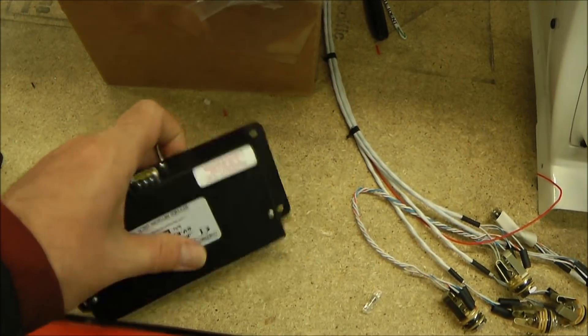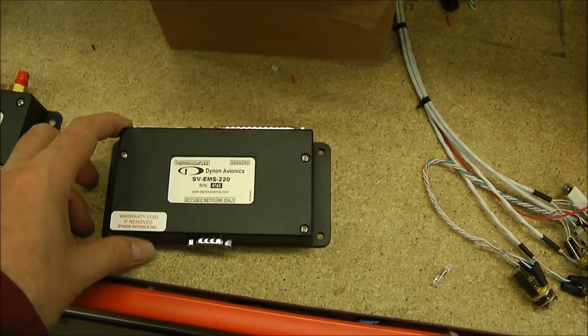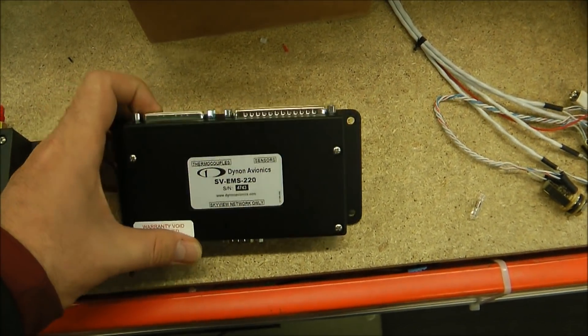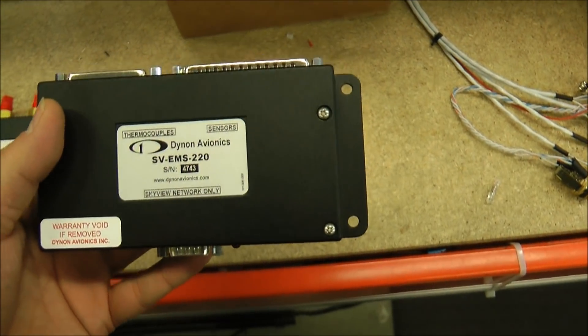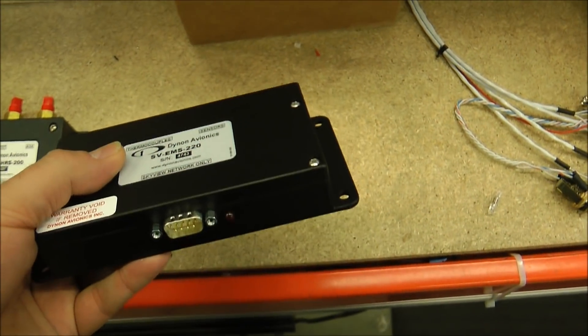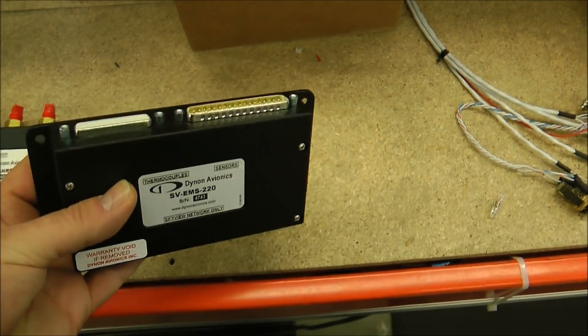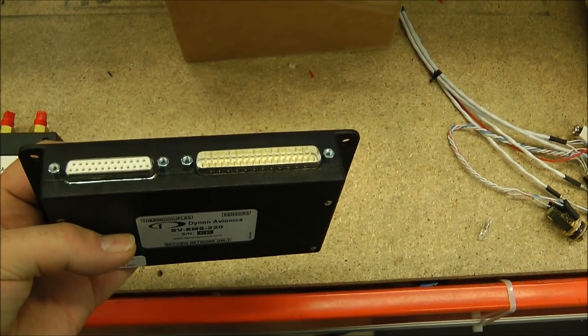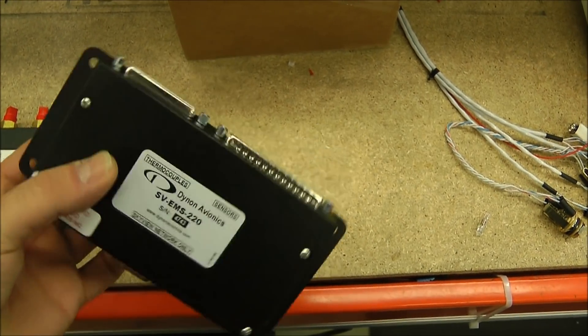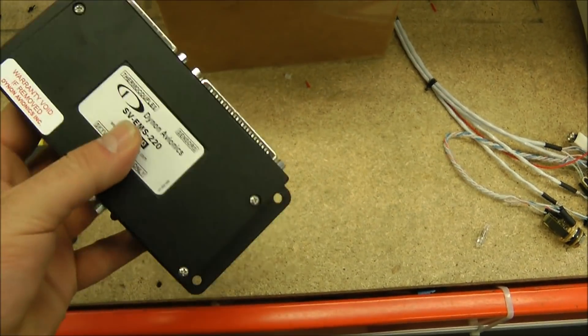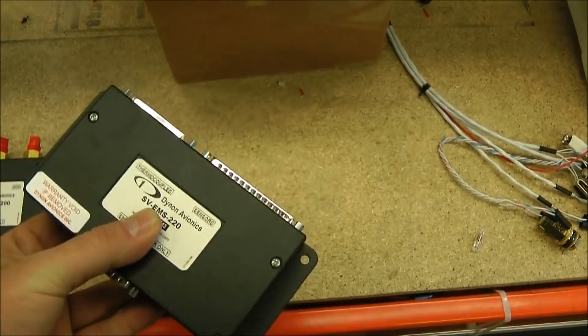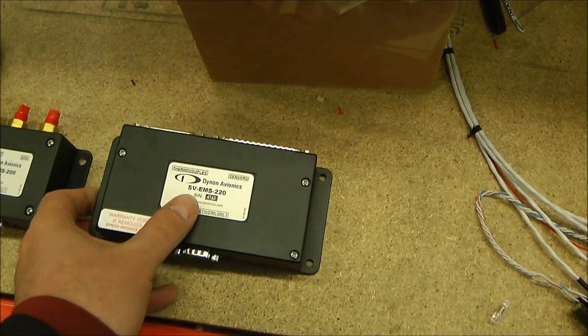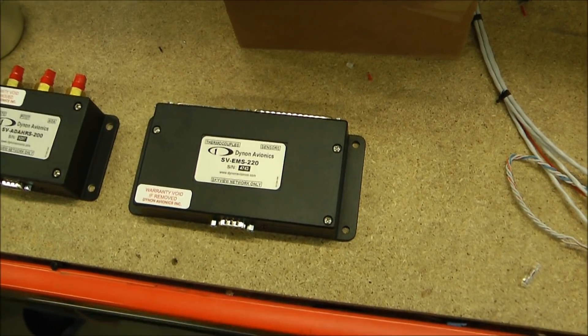There's really not a lot of options on this box for mounting. This one's what's called the EMS module. All the manufacturers now pretty much have one. They call it an EMS or an EIS. It stands for Engine Monitoring System or Engine Information System. It's the box that all of your engine sensors and probes will plug into, like the EGTs, CHTs, oil pressure, oil temp, fuel flow. These don't care how they're mounted or where they're mounted.